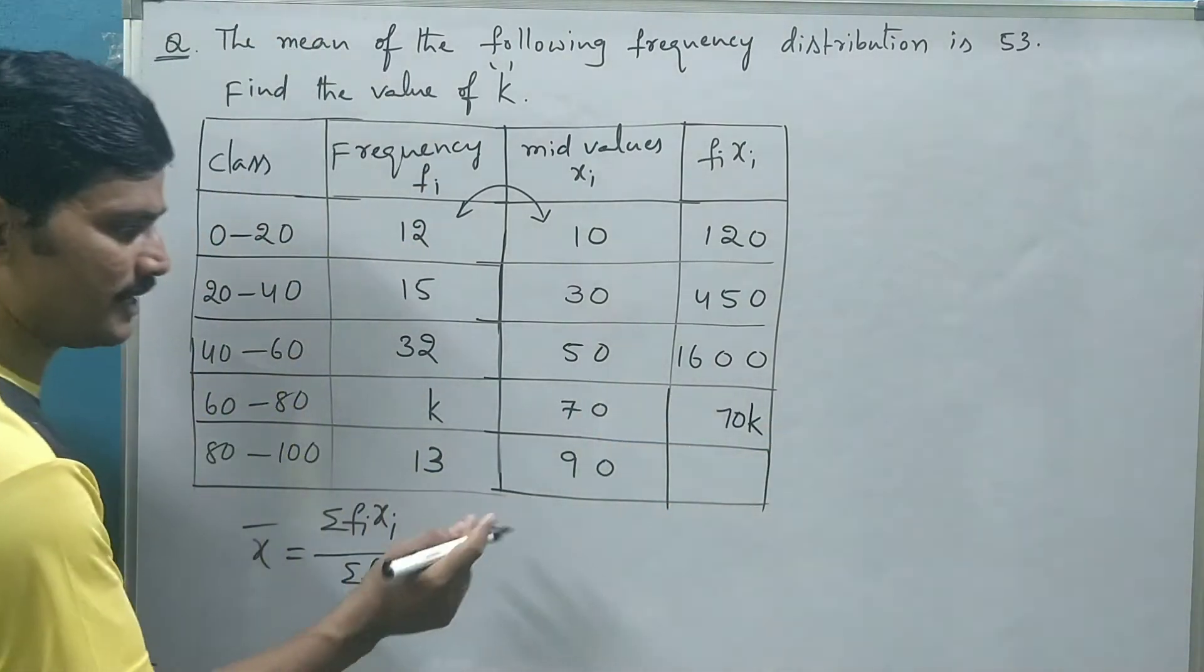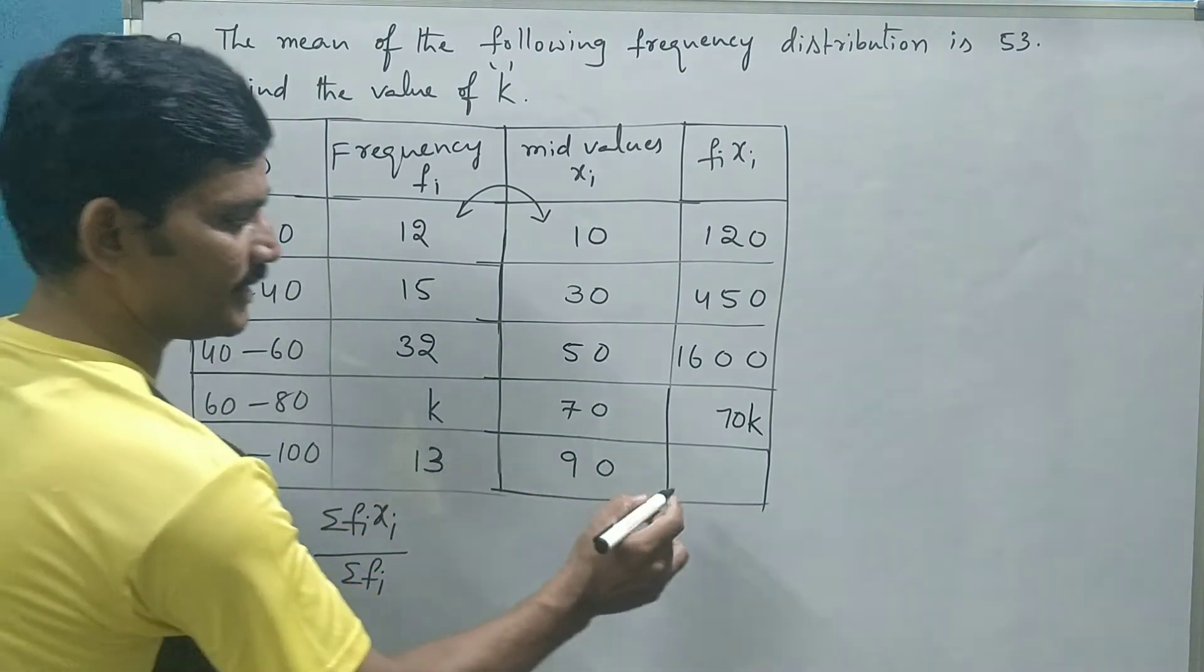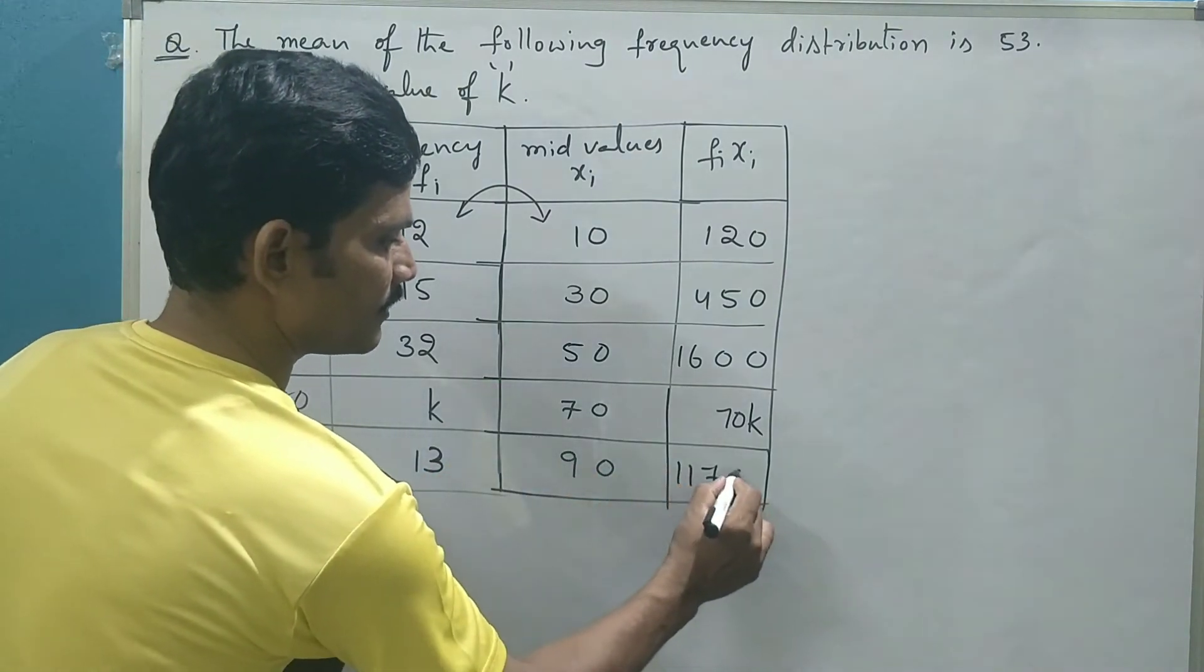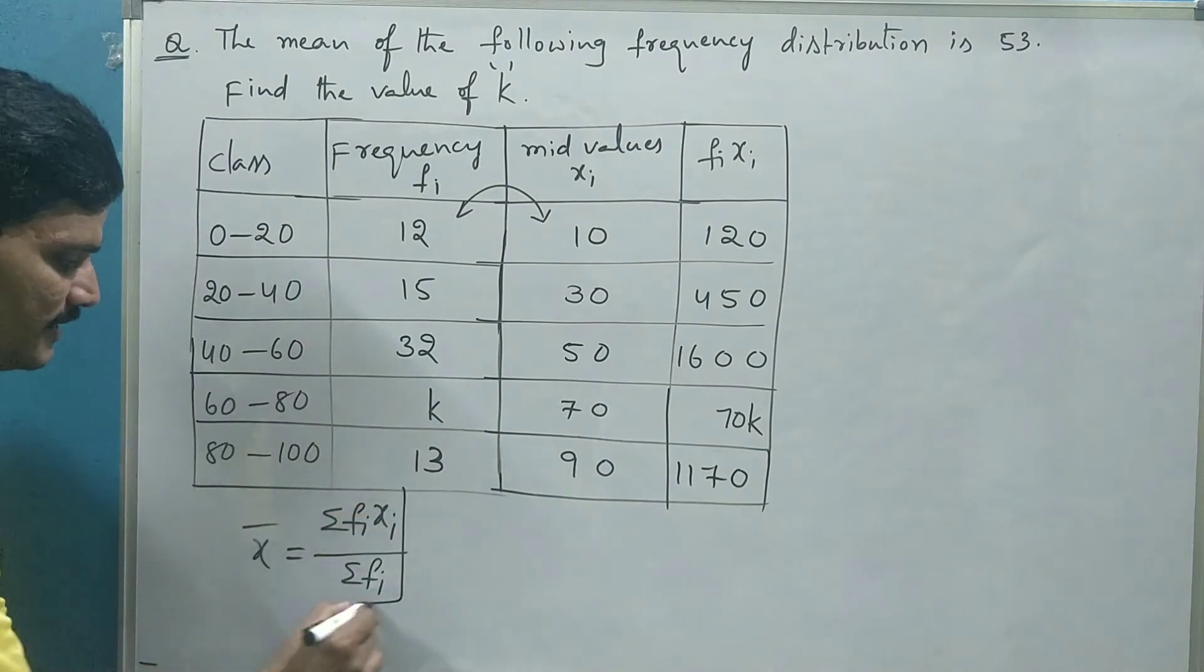And 70 into k, 70k. And 13 into 90, 1170. Now, after this, let us find the value of sum of the frequencies.